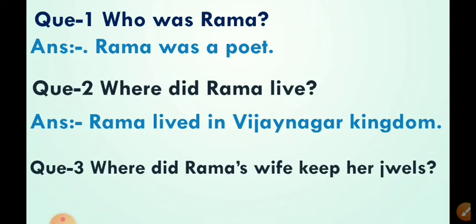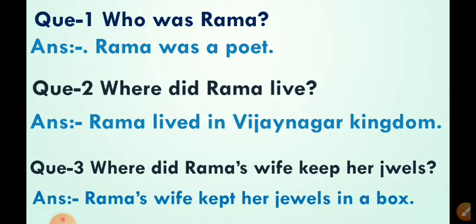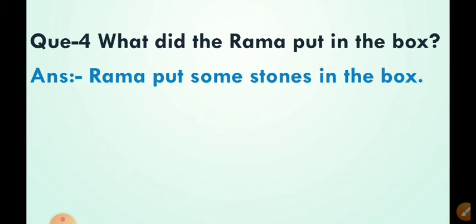Question three: 'Where did Rama's wife keep her jewels?' — Rama की wife jewels को कहाँ रखती थी? Answer: Rama's wife kept her jewels in a box. Rama की wife jewels को एक box में रखती थी. Fourth: 'What did Rama put in the box?' — Rama ने box में क्या रख दिया था? Answer: Rama put some stones in the box. Rama ने box में कुछ stones रख दिए थे.